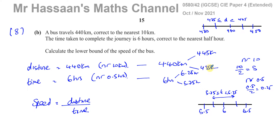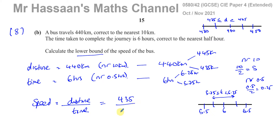So these are the upper and lower bounds of the distance and the time. Now we want to find the lower bound of the speed. When we have a calculation involving upper and lower bounds, we have to think about what gives us the lowest possible value. When dividing two numbers, the smallest possible answer comes from the smallest numerator divided by the biggest denominator. For division, the lower bound uses the lower bound of the distance over the upper bound of the time.